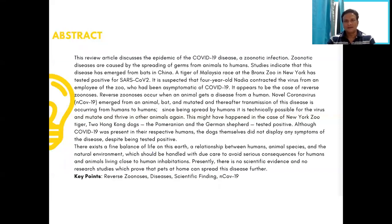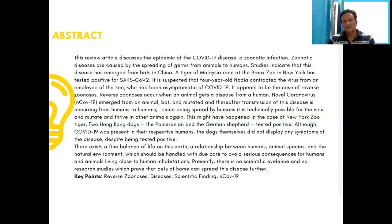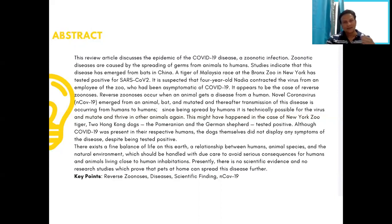All of us know that this problem started from a wet market in Wuhan, where a person came in contact with a bat and other animals. Because we have limited study, they were impacted, and thereafter it started spreading from animal to human, and then human to human. This paper pertains to how COVID-positive people have infected other animals.